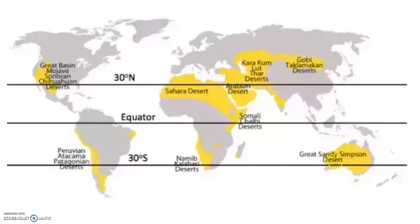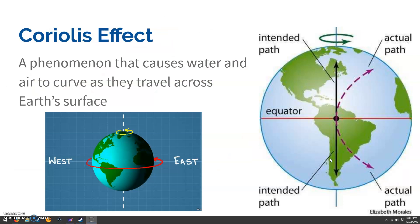The Coriolis effect is a phenomenon that causes water and air to curve as they travel across Earth's surface. Basically, even though the Earth is all just like one big thing and we're rotating all at the same time, because it's a sphere,